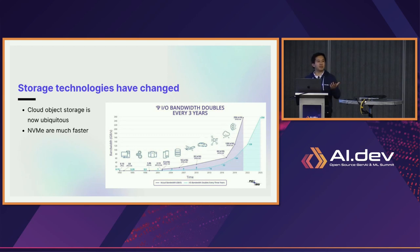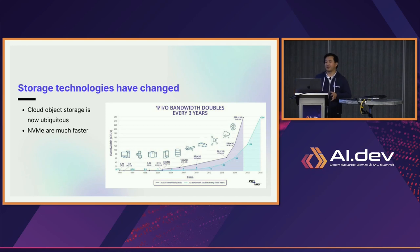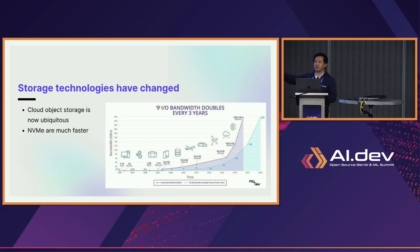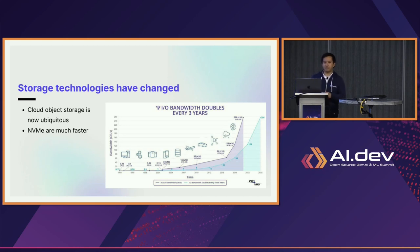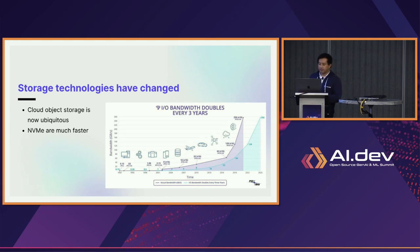Have you seen the recent announcement by AWS on S3 Express? I'm super excited to try it out. There are some Arrow/Rust issues integrating with that new API, but once that's done, I think it's going to enable a lot of vector search use cases — we can store data directly on S3 Express and get a lot better performance.